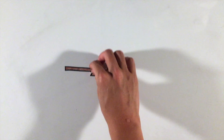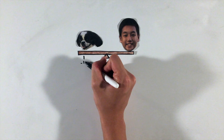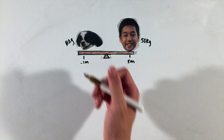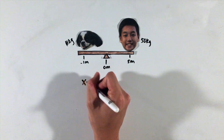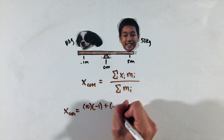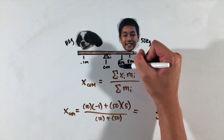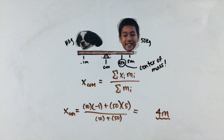For systems of point masses located at different positions, the center of mass location can be defined as the summation of each mass times its distance from an origin you get to choose, all divided by the sum of the masses.